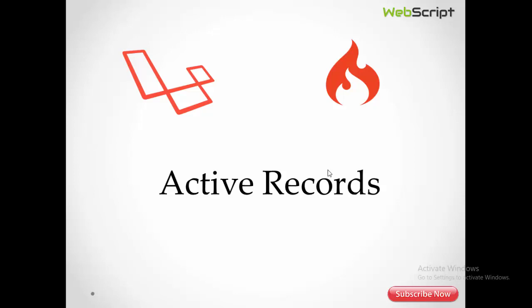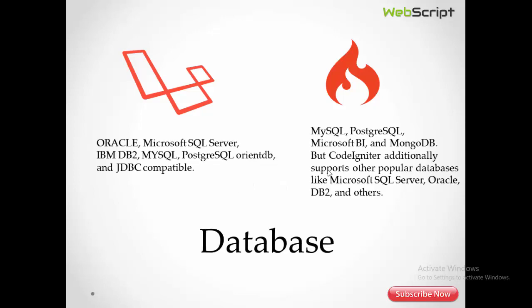Regarding active records, both frameworks offer active records through query builder classes, so you can perform read, write, update, and delete operations using predefined methods like select and get. CodeIgniter supports a wider variety of databases compared to Laravel, but Laravel makes use of ORM — Object Relational Mapping — which CodeIgniter does not offer. With ORM, you don't need to interact directly with the database; it's an abstraction layer over the database tables, so you can create a model and perform all database operations without writing raw SQL queries.